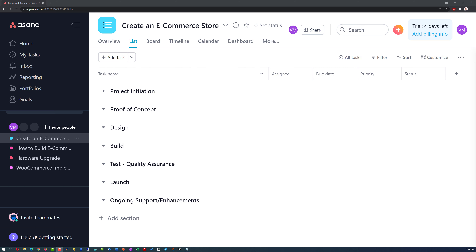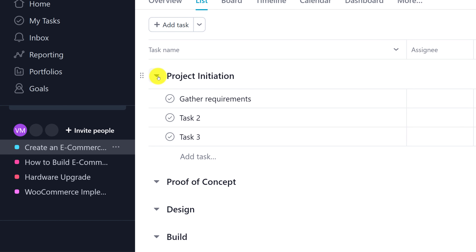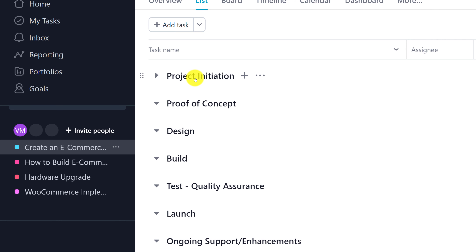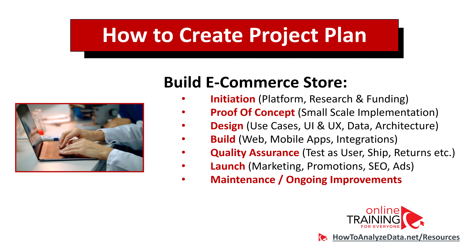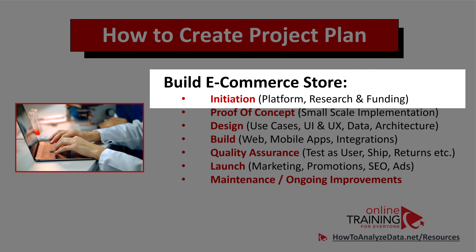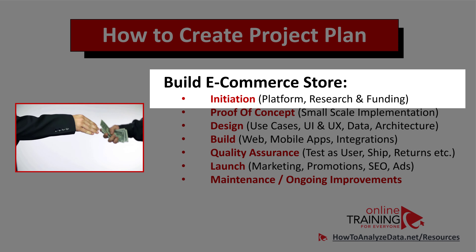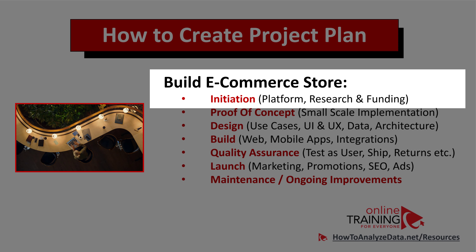Now let's take a look at how to create an effective e-commerce project plan in Asana. One of the best ways to organize a project in Asana is by creating project milestones and putting tasks under each milestone. In this project, there are seven milestones: project initiation, proof of concept, design, build, test for quality assurance, launch of the website, and ongoing support and enhancements. Different activities are typically performed in different phases. For example, as part of the initiation phase, you typically research the platform and make sure you secure the funding to run the entire project. You also need to decide what skills are needed and where to find the right team members.